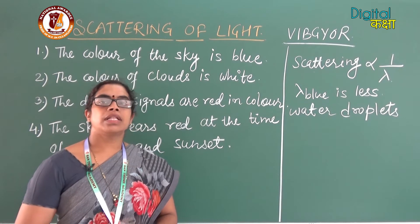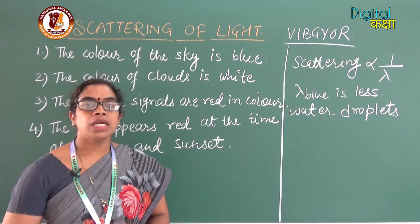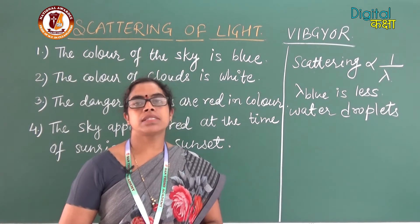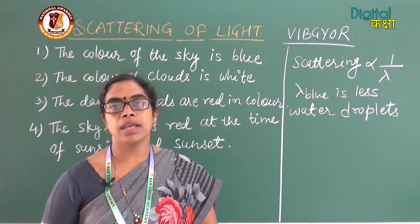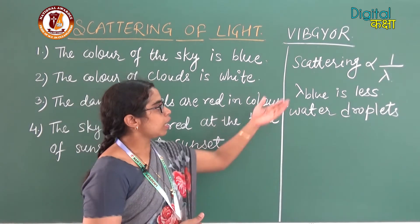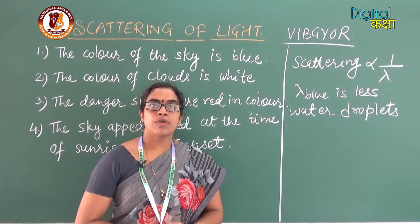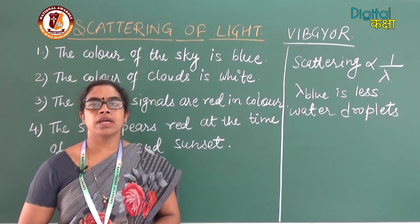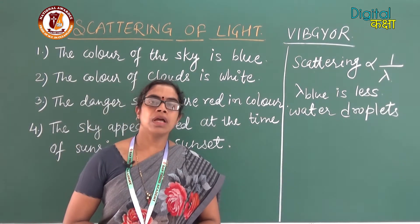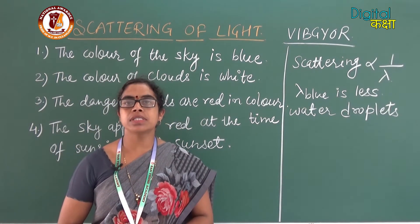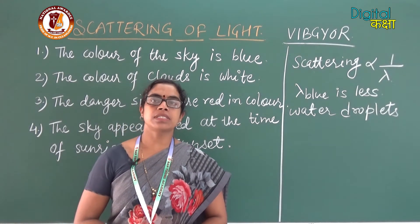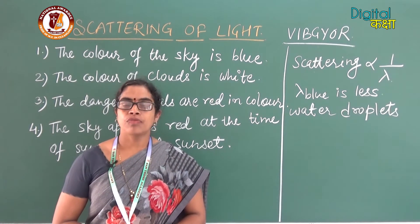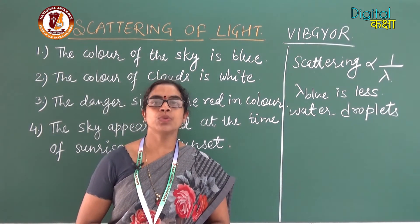That is the reason that whenever we see the clouds in the sky, their color appears white. Now, depending on these factors, another thing can be explained: when astronauts are in space, the sky appears black to them. The reason is simple — in space there is no obstacle present for the scattering phenomena to take place.